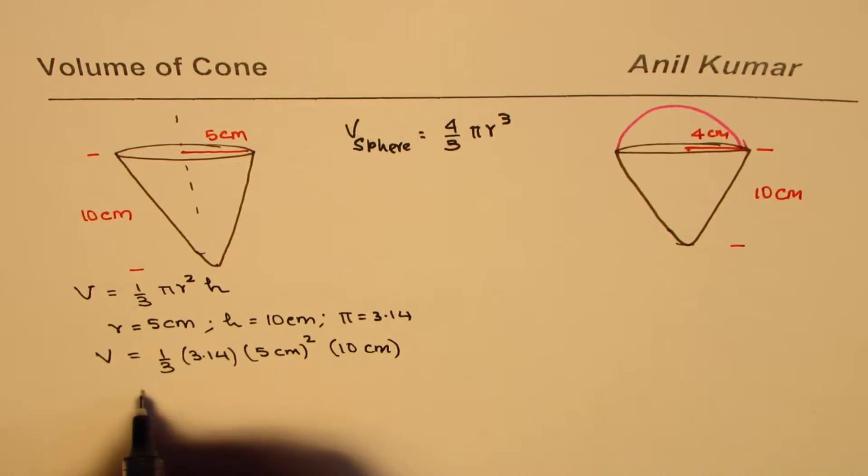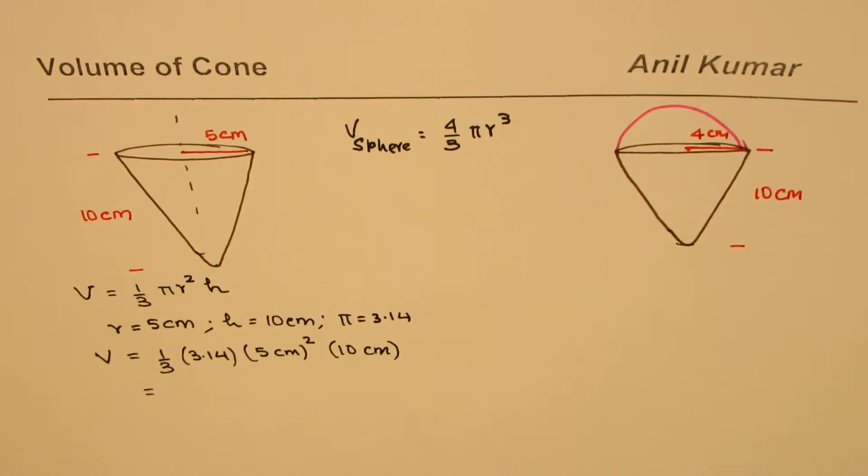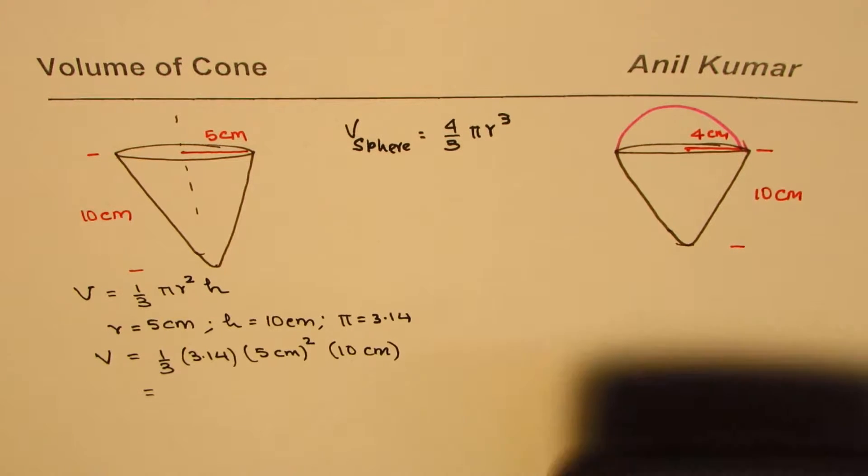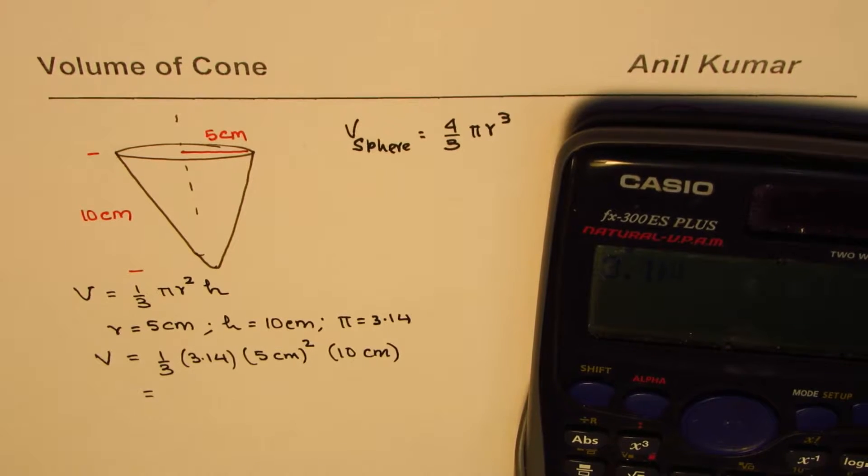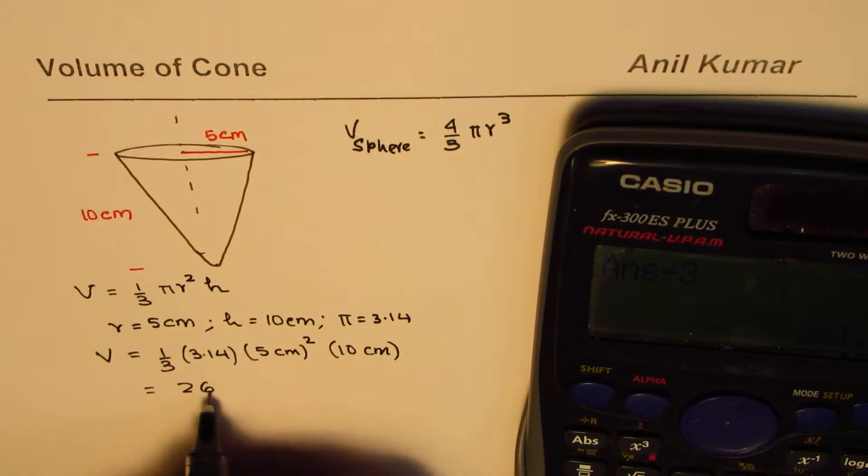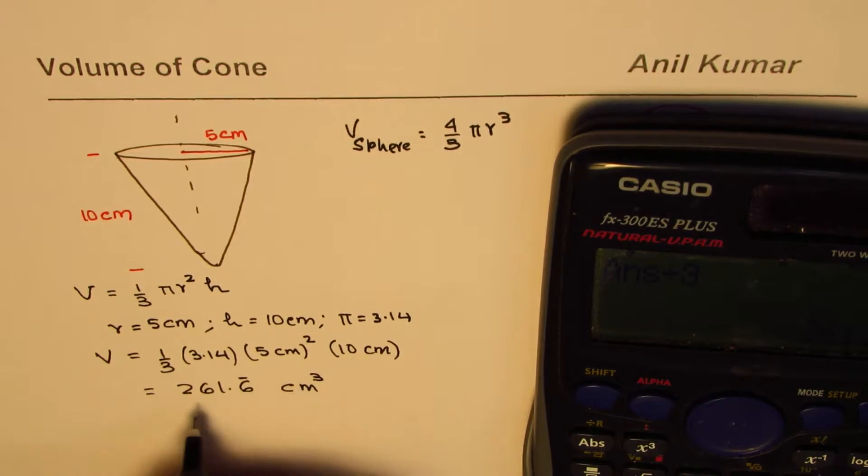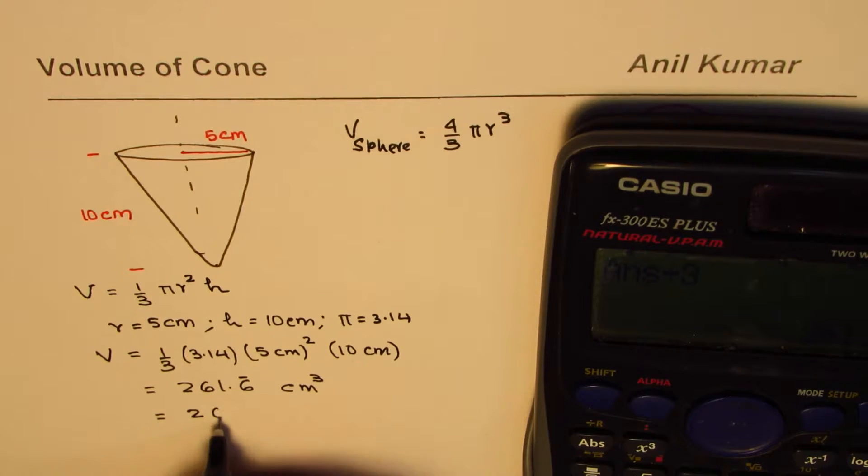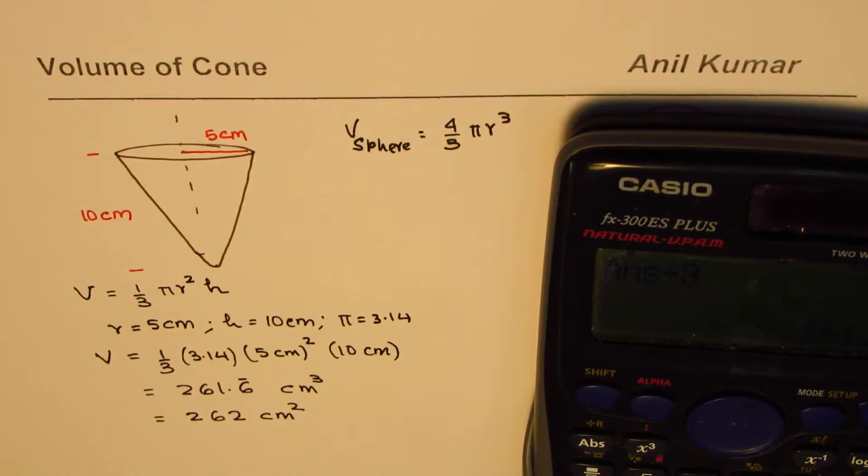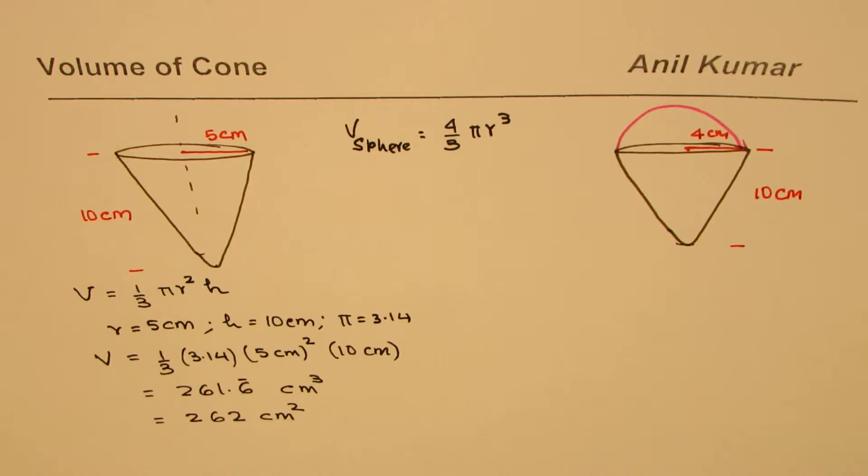When you multiply this, units will be centimeter cube. Let's multiply: 3.14 times 5 square times 10 divided by 3 equals in decimals 261.6 recurring centimeter cube, and if we round it to whole numbers we get 262 centimeter cube. That's the volume of this particular cone. It's direct application of the formula.